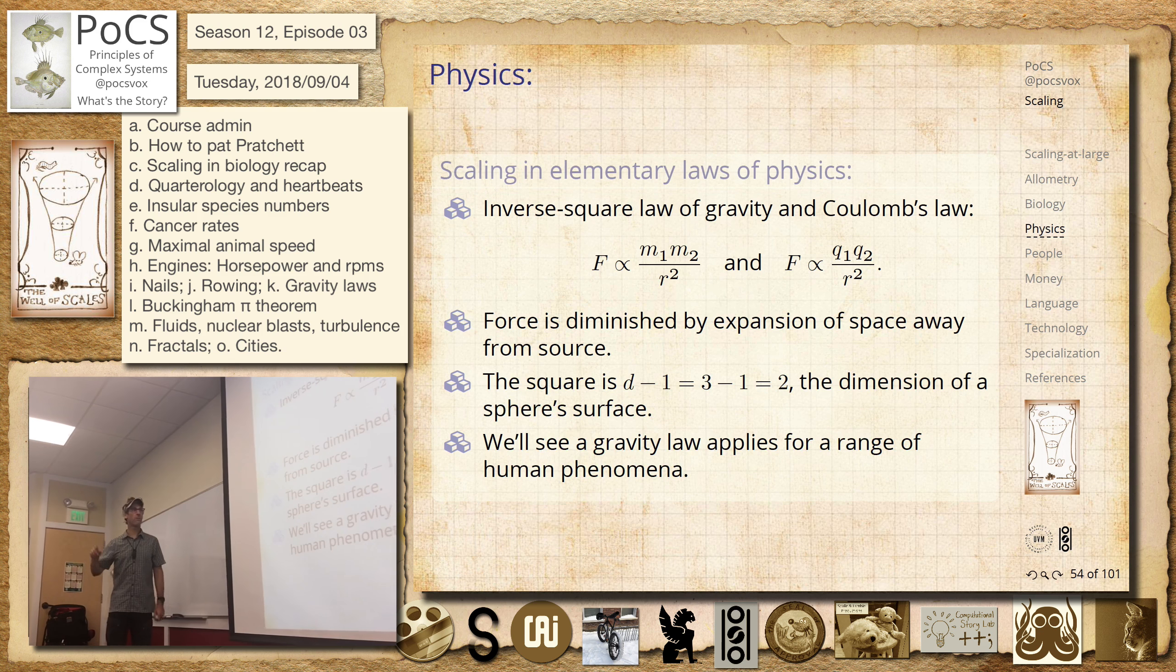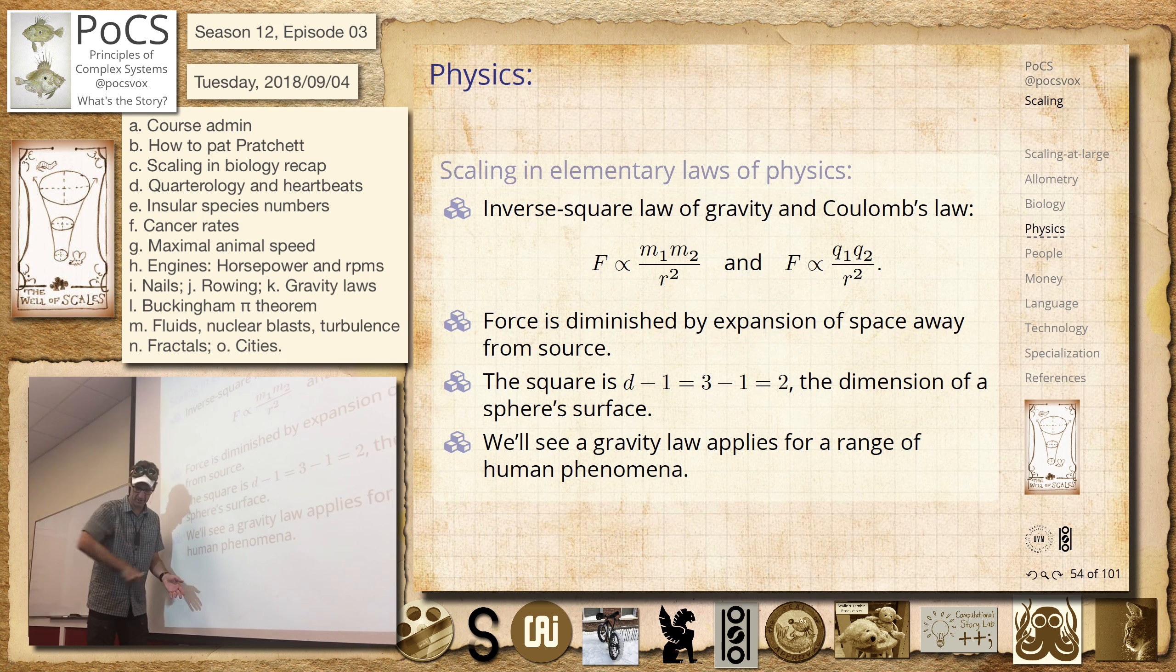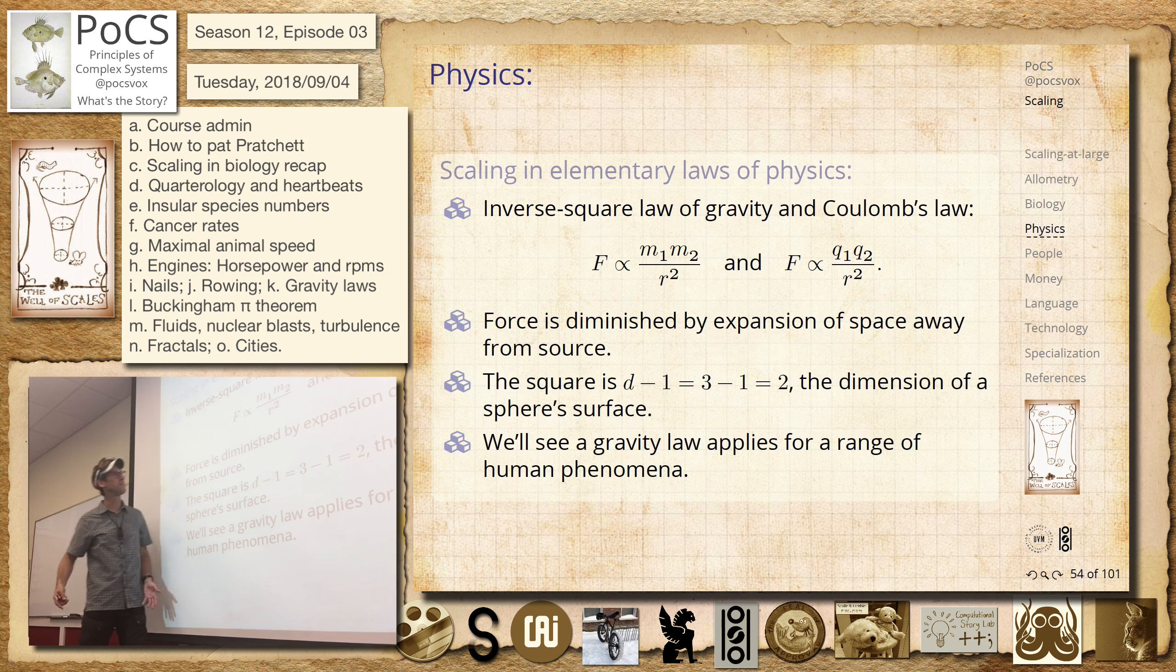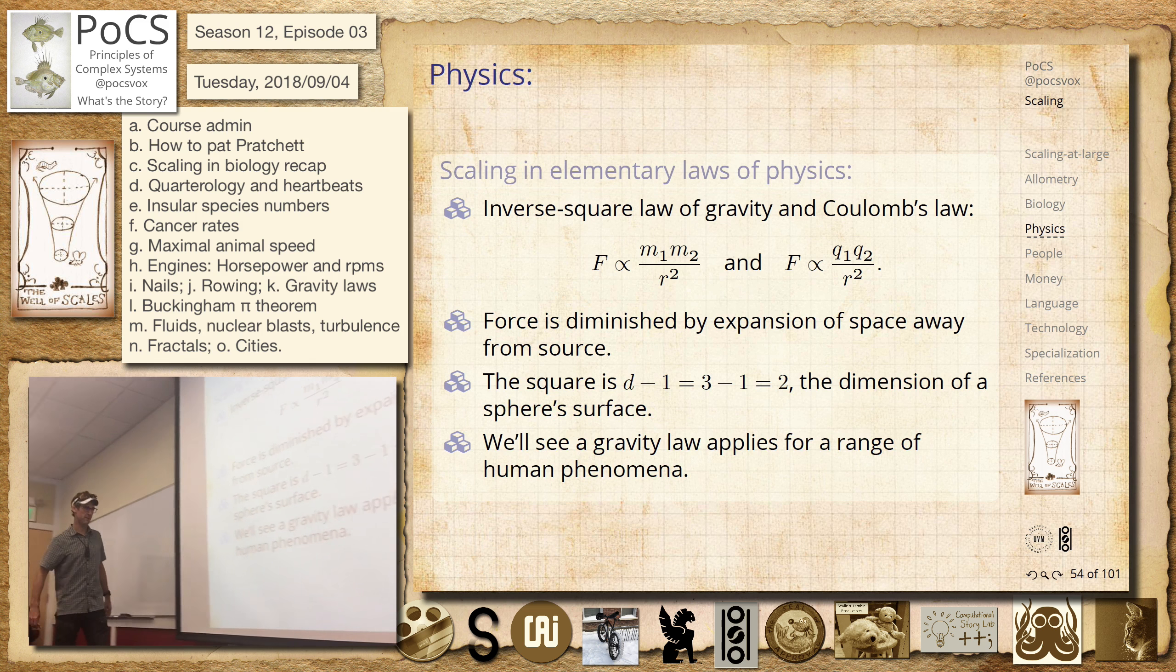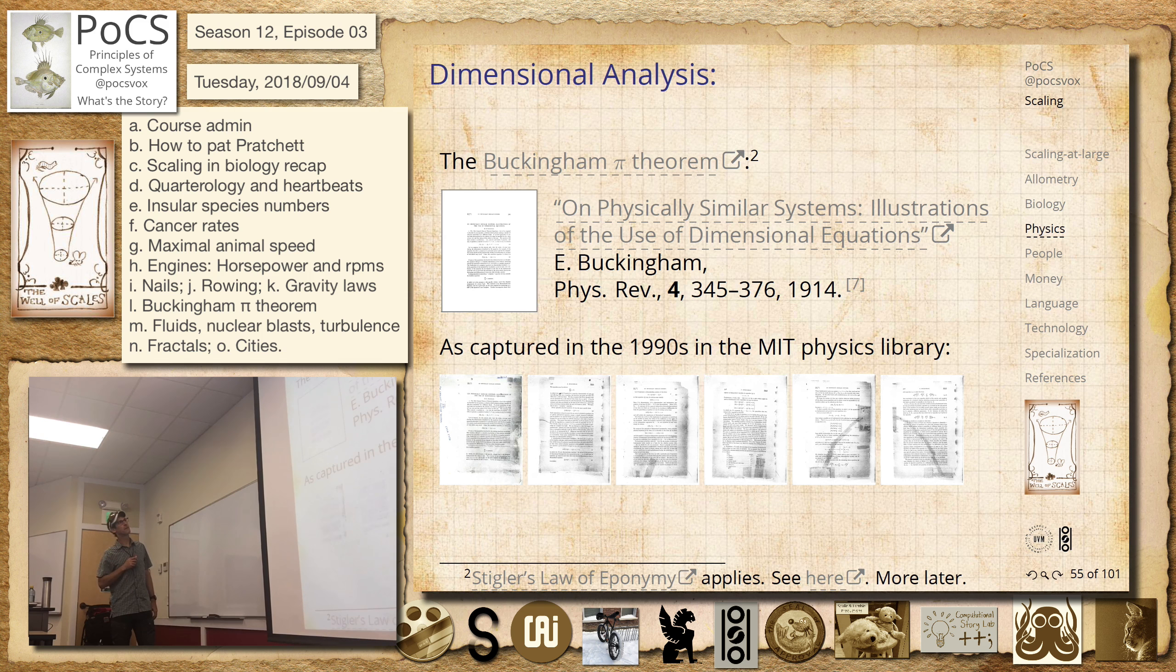And it's just radius to the power of one because now we're in two dimensions and we're just worried about the circumference and that's growing like two pi r. So there's a version of a gravity law and it doesn't apply for everything, but that generalizes.